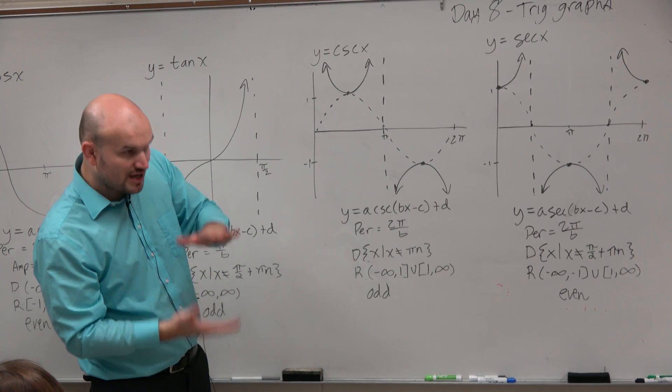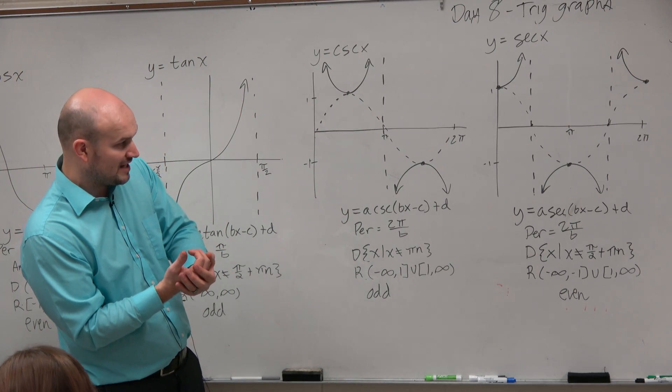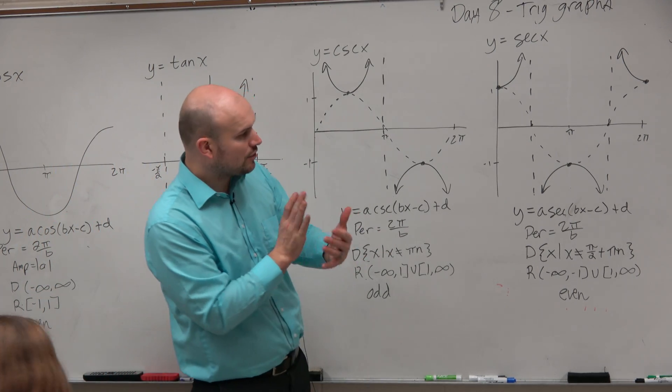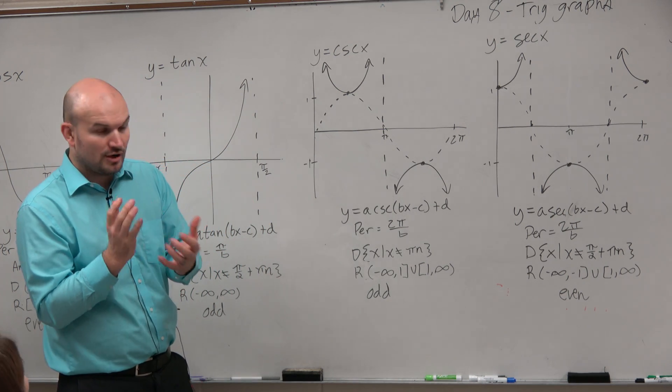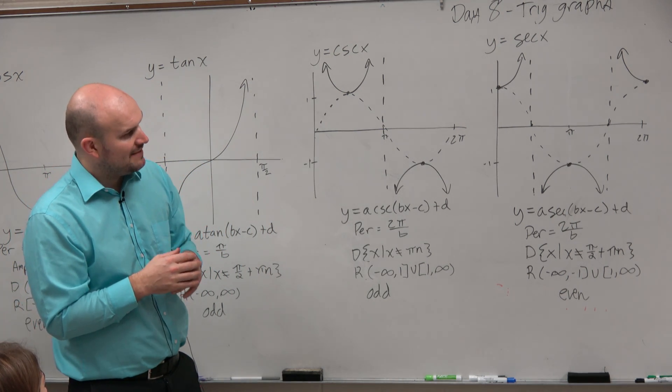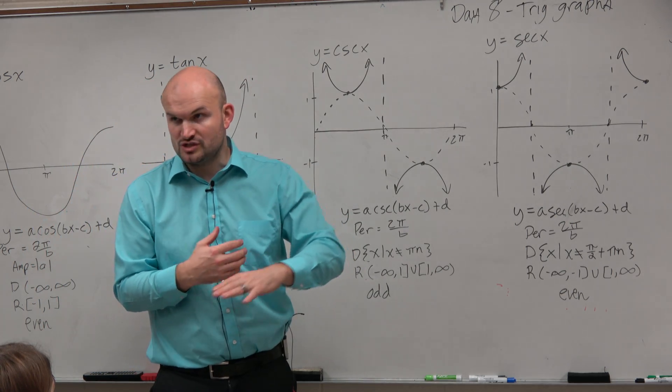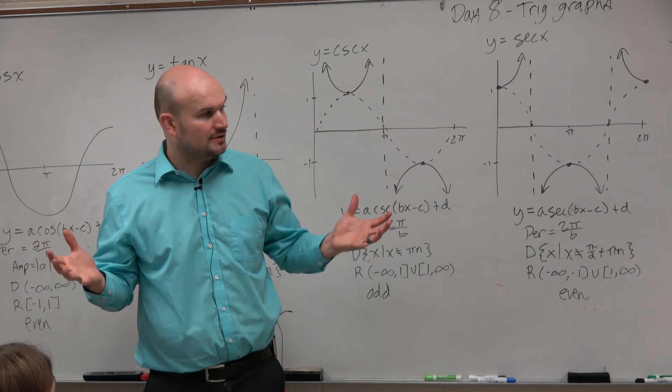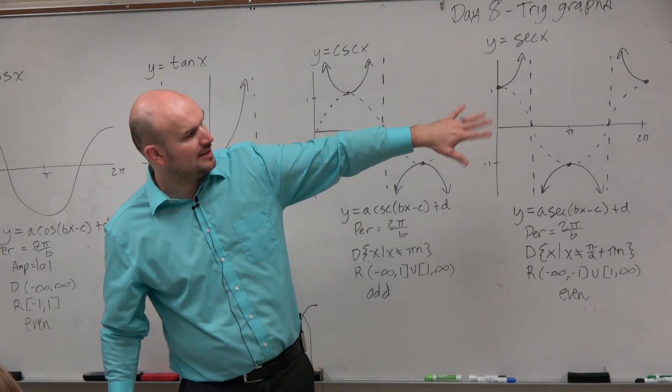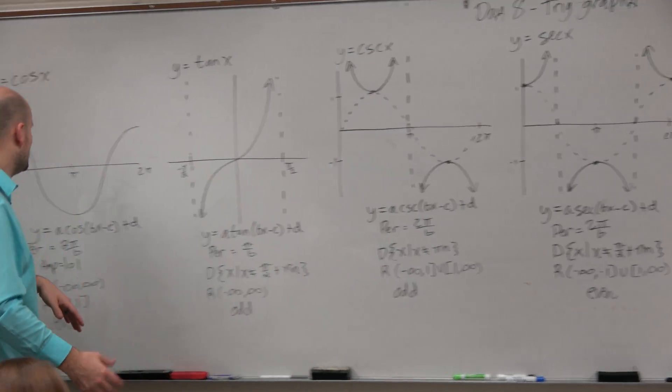But remember, a is going to be your vertical stretch and compress or reflection of the x-axis. b is your horizontal stretch and compression or reflection of your y-axis. And then c was your horizontal shift, and d was your vertical shift. So exactly what we have already covered. And again, I labeled those over there.